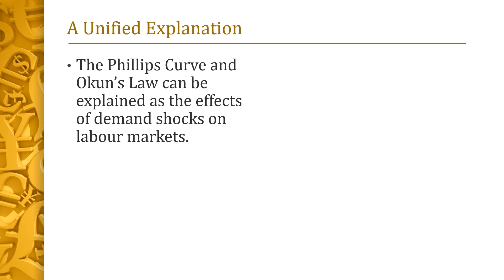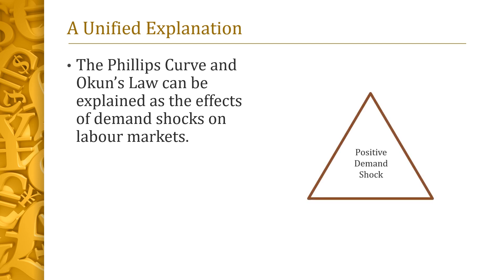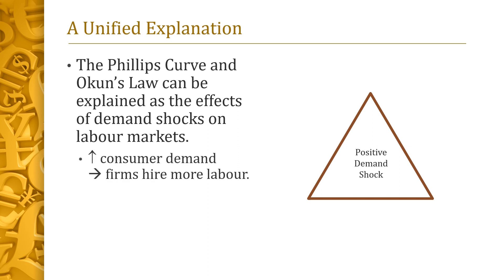A unified explanation for the Phillips curve and Okun's law emerges if we consider the effects of demand shocks on labor markets. First, consider a positive demand shock — that means consumers want to buy more goods and services and are willing to pay more for them. So it becomes profitable for firms to raise output. One way they do so is by hiring more labor. Tight labor markets lead to lower unemployment and higher wages. These higher wages, in turn, lead firms to raise their prices. In this way, the positive demand shock leads to higher output, lower unemployment, and higher inflation.